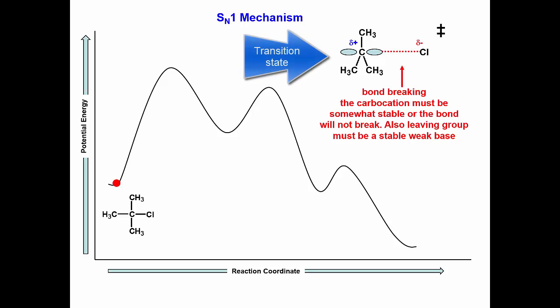In the transition state of the first step of an SN1 reaction, this is what happens. The carbon-chlorine sigma bond begins to break and a positive charge is forming on the carbon and the negative charge is forming on the leaving group.